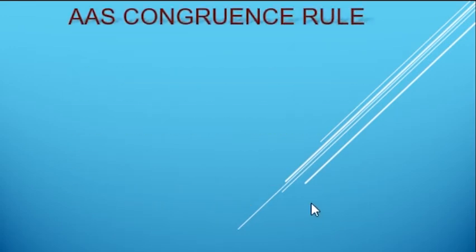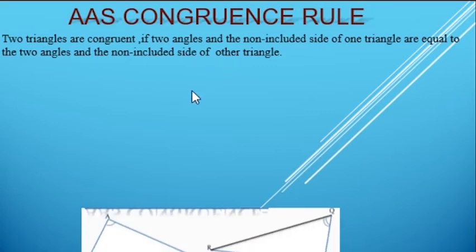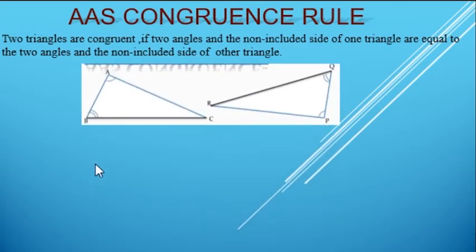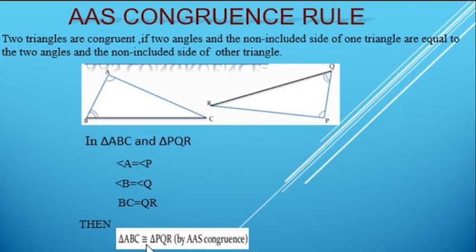Next, we have Angle Angle Side congruence rule. The 2 triangles are congruent if 2 angles and the non-included side of 1 triangle are equal to the 2 angles and the non-included side of the other triangle. In this figure, we have angle A equals to angle P, angle B equals to angle Q, and the non-included side BC equals to QR. It is clear from here that the 2 angles and non-included sides match, so the 2 triangles are congruent by Angle Angle Side congruence rule.